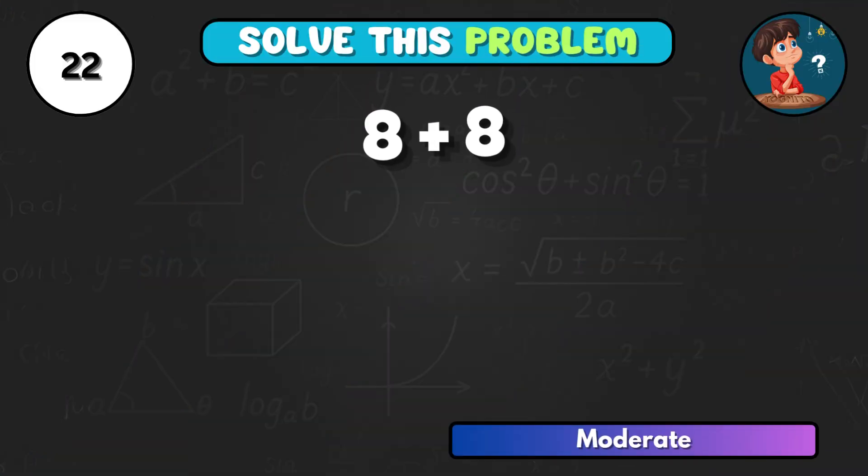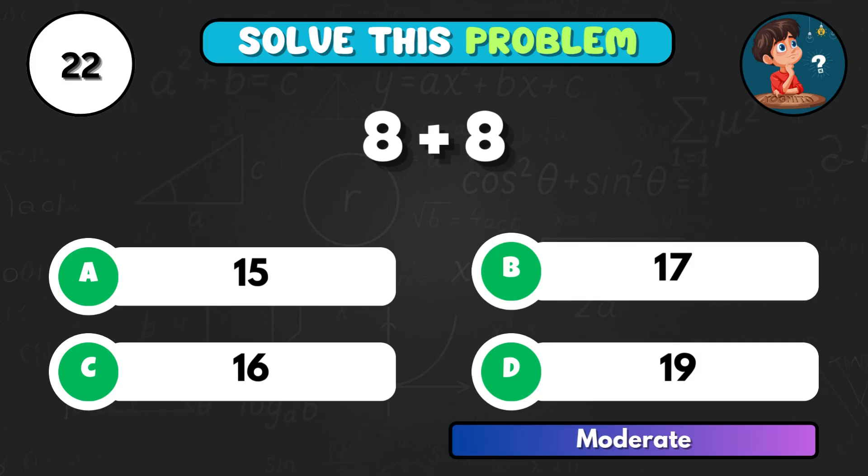Add 8 and 8, what's the outcome? Correct answer C, making 16.